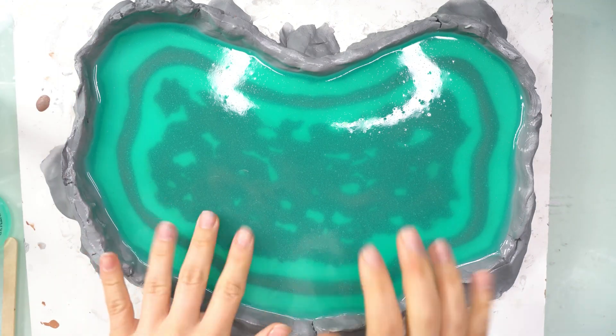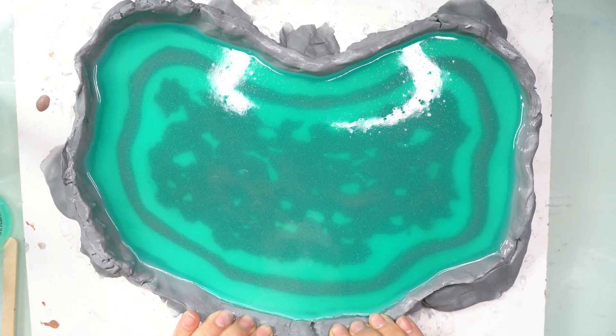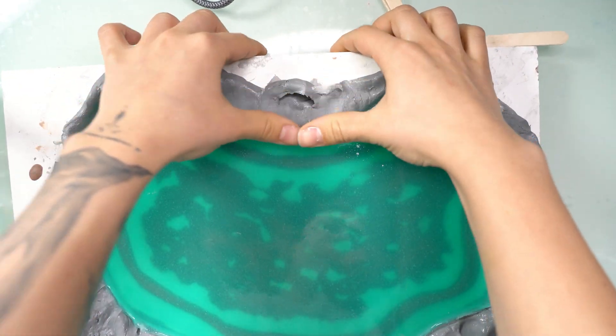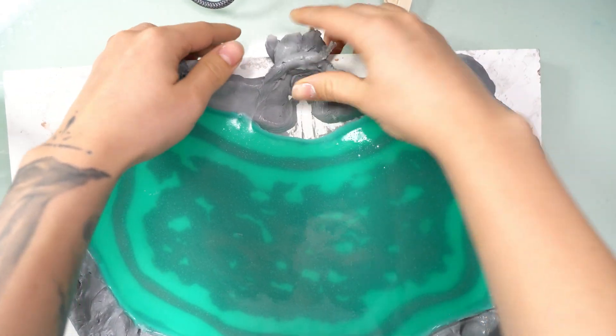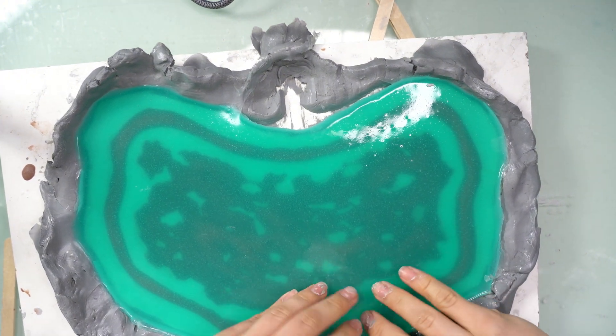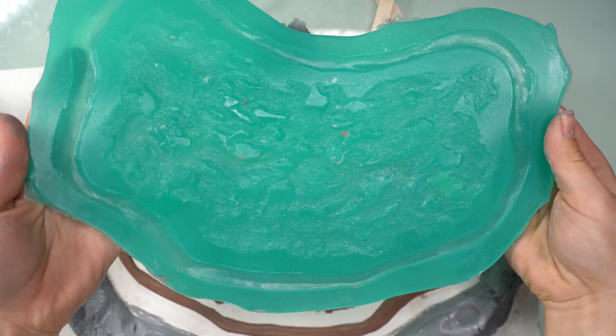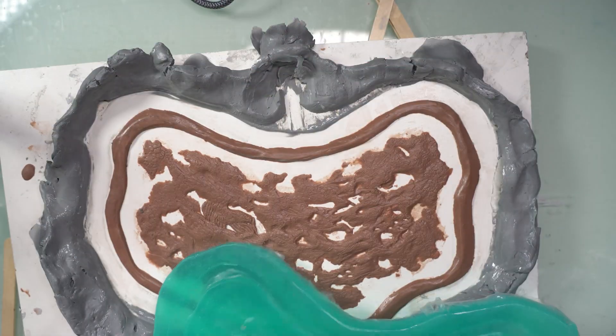Different silicones have different cure times, but I let this cure for about 45 minutes and then I started to peel back the clay and remove the mold. And once it's out, you want to clean it with some Dawn dish soap and warm water. You want to get out any little clay bits or any leftover crystal clear that might be stuck to it.